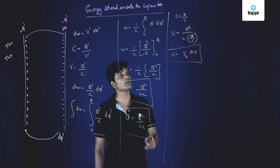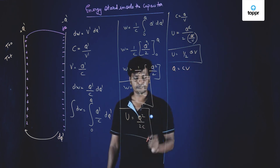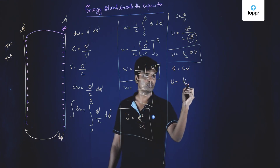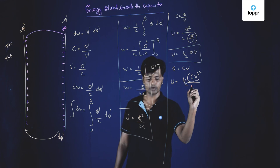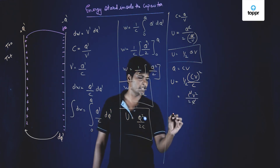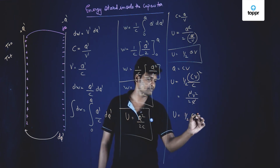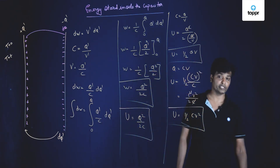Now let us form the equation in terms of C and V. Since q = C × V, substituting into U = q²/2C gives U = (CV)²/2C = C²V²/2C. One C cancels, so the electric potential energy is U = (1/2)CV². This is also the electric potential energy stored inside the capacitor.